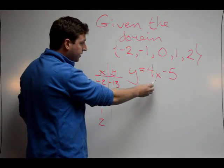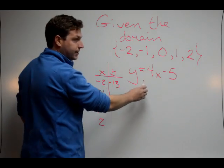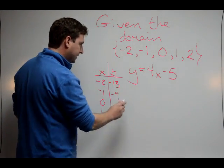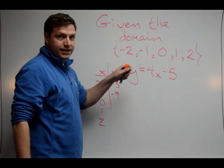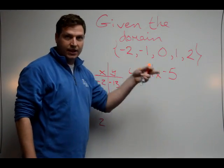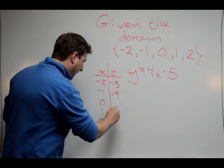Negative 1 times 4 is negative 4 minus 5 is negative 9. The next number is 0. We all know 0 times 4 is just going to give us 0 minus 5. We'll get a negative 5.